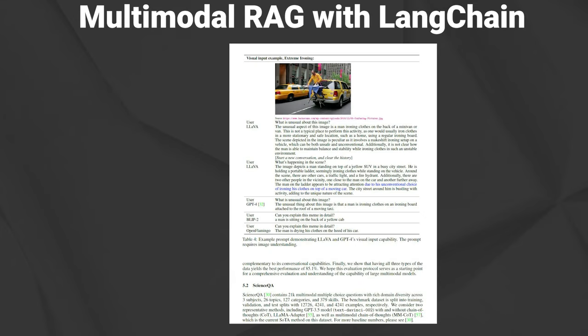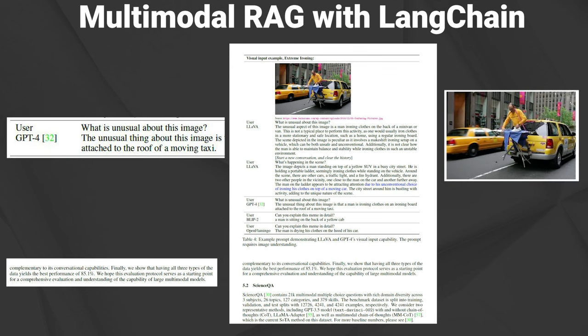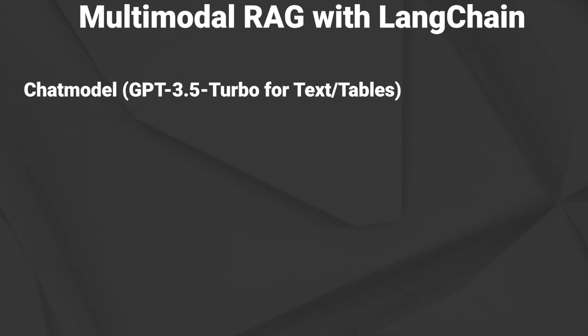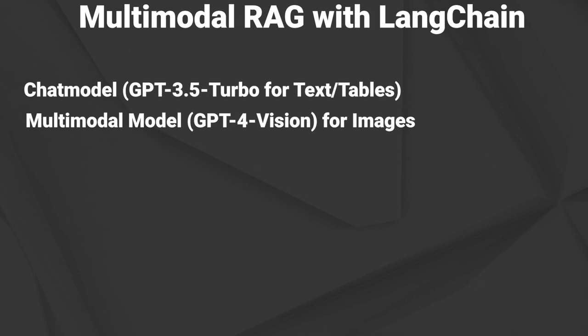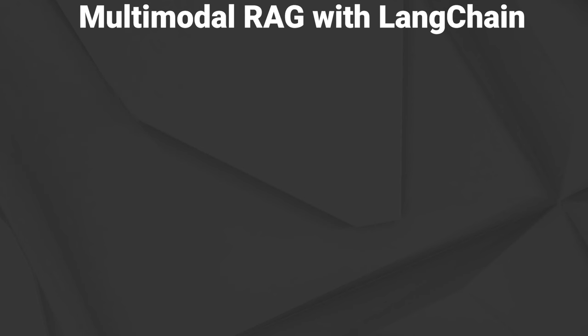PDFs are more than just files containing text. They include text, but also images and tables. These elements are usually not standalone — their sequence and arrangement is also important. This is quite difficult to represent. Thanks to new multimodal models, tables and images are no longer lost in the process and retrieval augmented generation over PDFs can be significantly improved compared to before.